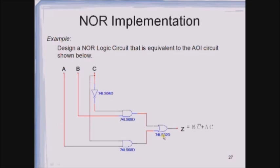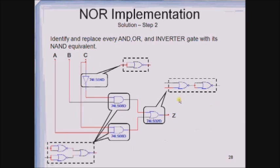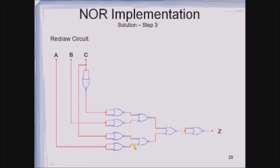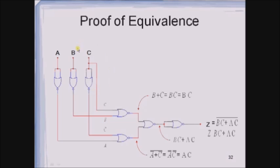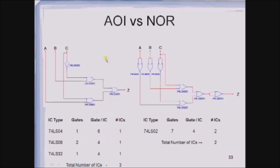Taking the same circuit as an example: the AND gates are replaced with the equivalent NOR implementation and the OR gate is replaced with the equivalent NOR implementation. We then eliminate the double inversions — here we have two double inverters, so we eliminate them. This yields the expression Z equals BC̄ + AC, which is the same as the AOI implementation. Comparing AOI versus NOR gate implementation, AOI requires three ICs but NOR requires only two ICs.